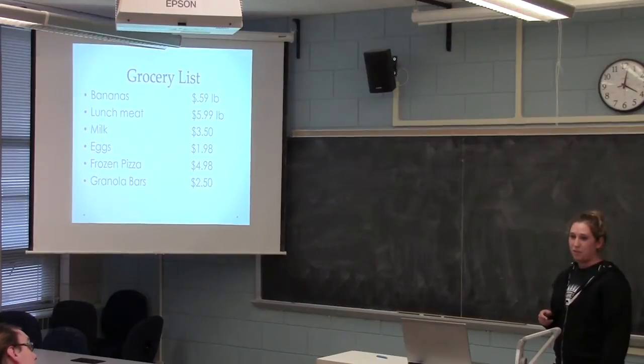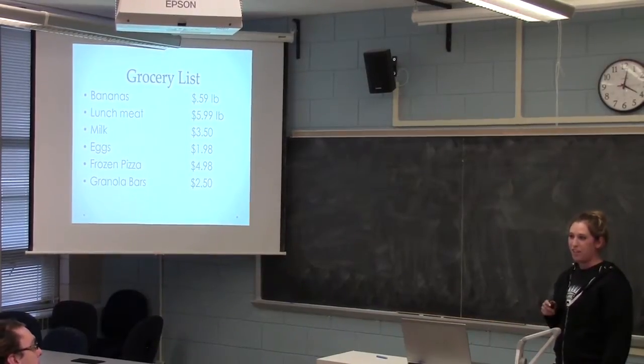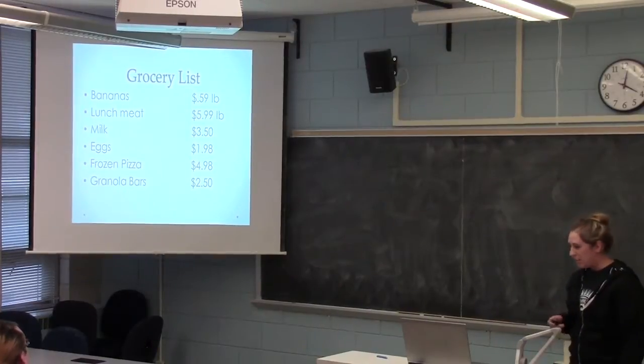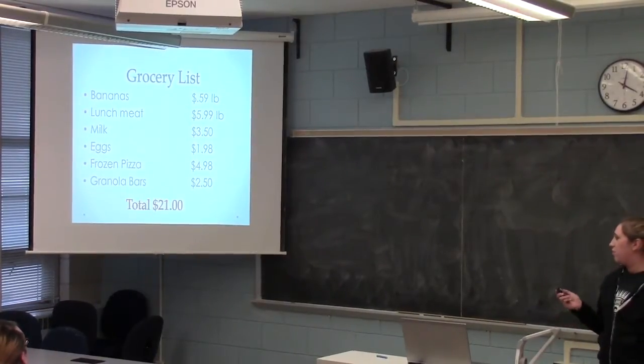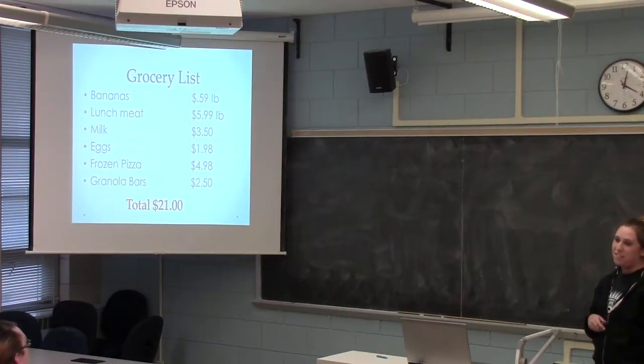Frozen pizza, maybe $5 for a semi-decent one. And some granola bars. You could say this maybe averages around $21. And if you go up to the checkout and you have a total of $30 or $40, maybe the cashier made a mistake.